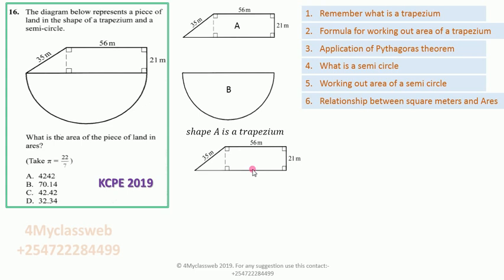A trapezium is a figure that has got at least two parallel sides. As you can see, this side here is parallel to the other one there. This parallel side is given as 56, but the one below is not given. Fortunately, the shape includes a rectangle, and since opposite sides of a rectangle are equal, this side is also 56. And since this side is 21, the opposite side is also 21.